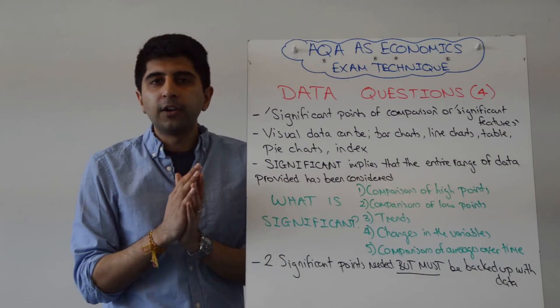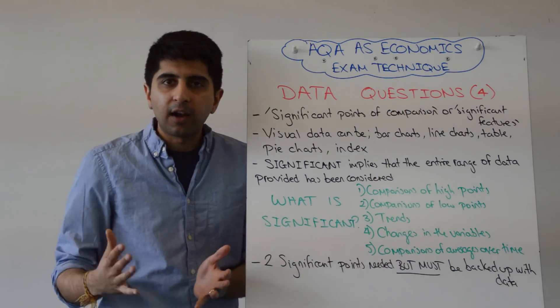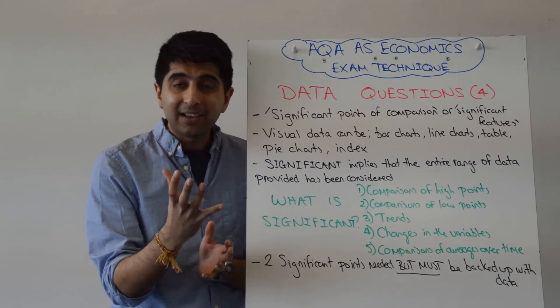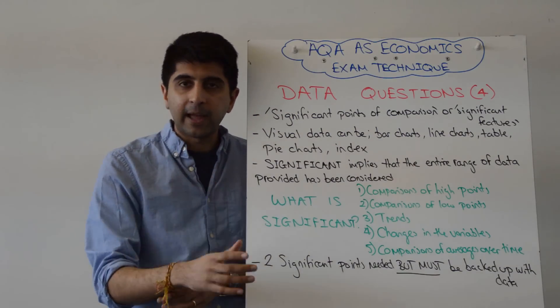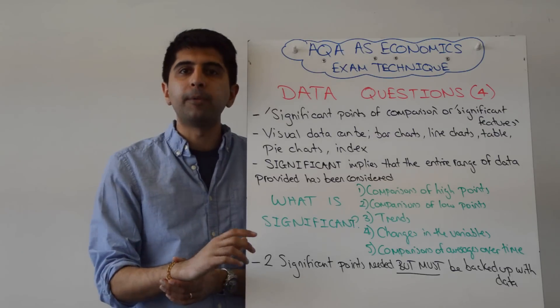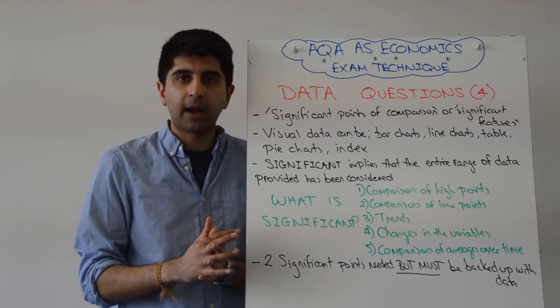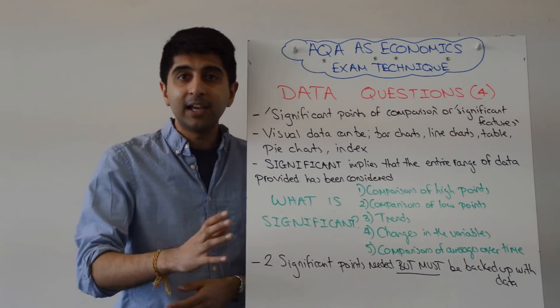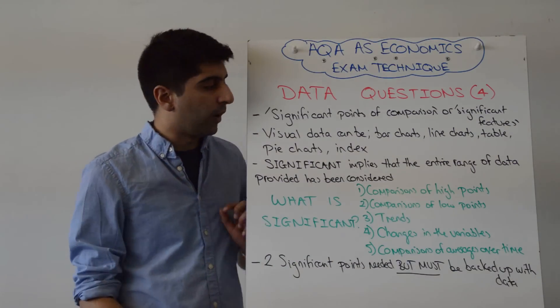The data set can be a huge variety. It could be a bar chart, line chart, pie chart. It could be an index. It could just be a table of data. It could be anything. So be prepared for that. Practice will help you identify key significant features or significant points of comparison from various data sets and get to grips with the variety of visual data that can come your way.